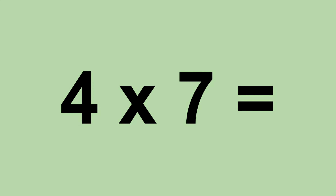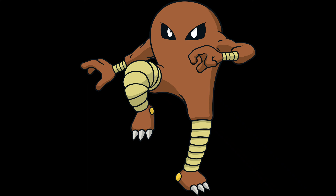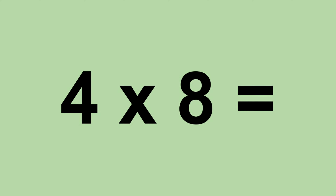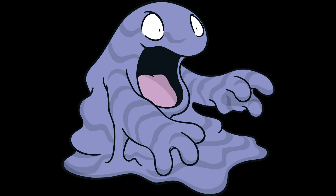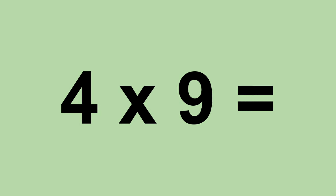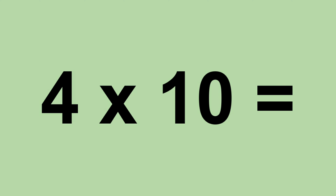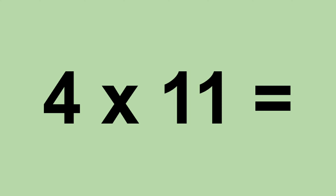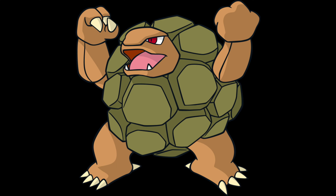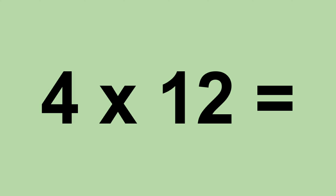Four times seven equals twenty-eight. Four times eight equals thirty-two. Four times nine equals thirty-six. Four times ten equals forty. Four times eleven equals forty-four. Four times twelve equals forty-eight.